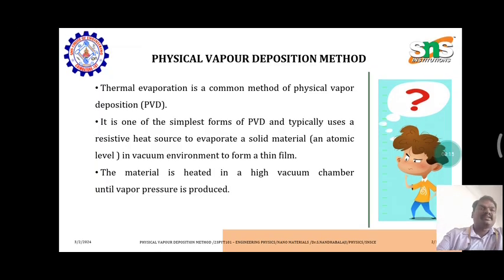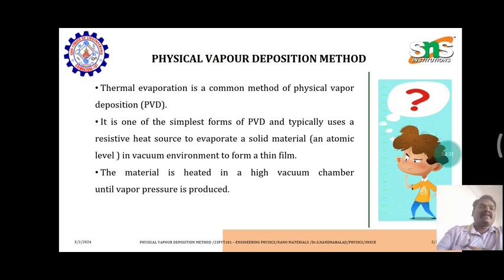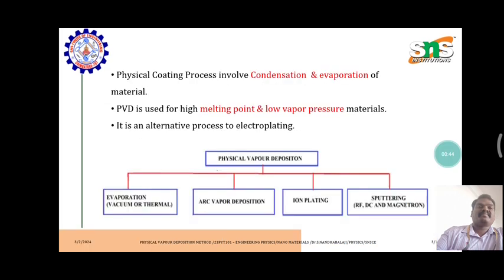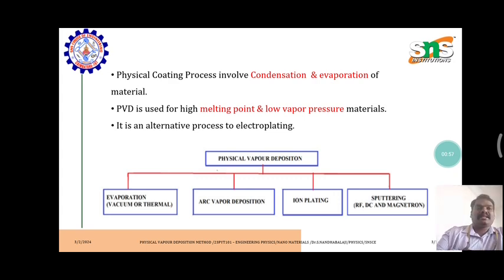Thermal evaporation is a common method of physical vapor deposition. It is one of the simplest forms of PVD and typically uses a resistive heat source to evaporate a solid material at an atomic level in a vacuum environment to form a thin film. The material is heated in a high vacuum chamber until vapor pressure is produced. The physical coating process involves condensation and evaporation of material. PVD is used for high melting point and low vapor pressure materials, and it is an alternative process to electroplating.